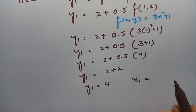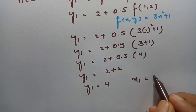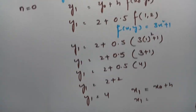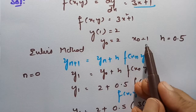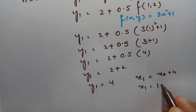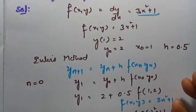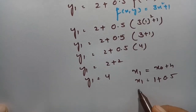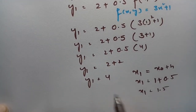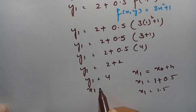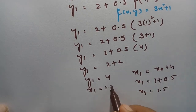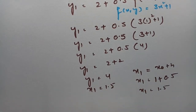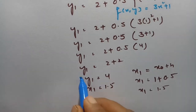Now, what about x₁? x₁ = x₀ + h. x₀ is 1 and h is 0.5, so x₁ = 1.5. I got x₁ = 1.5 and y₁ = 4.